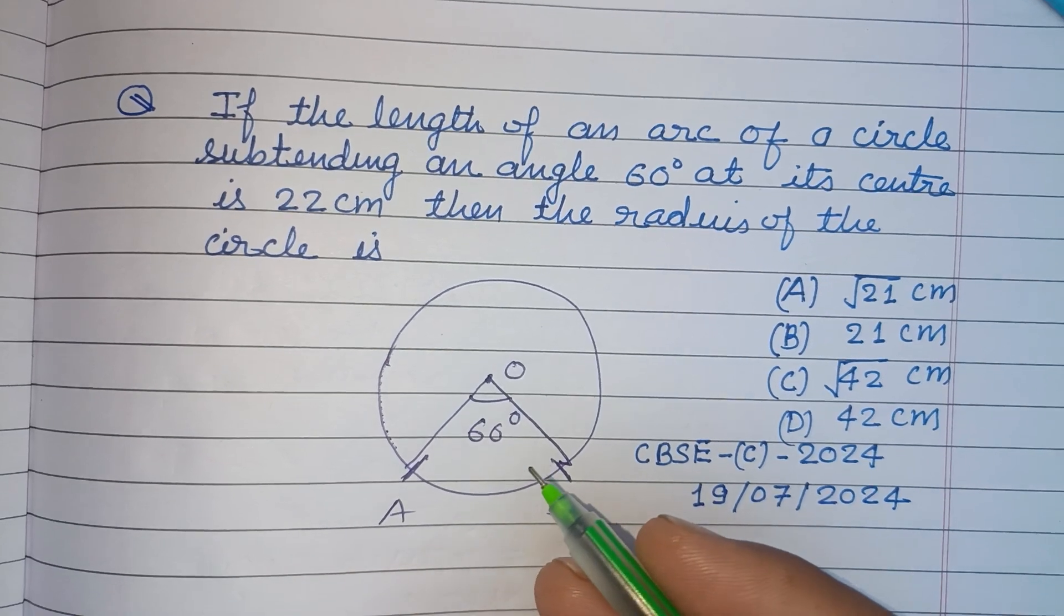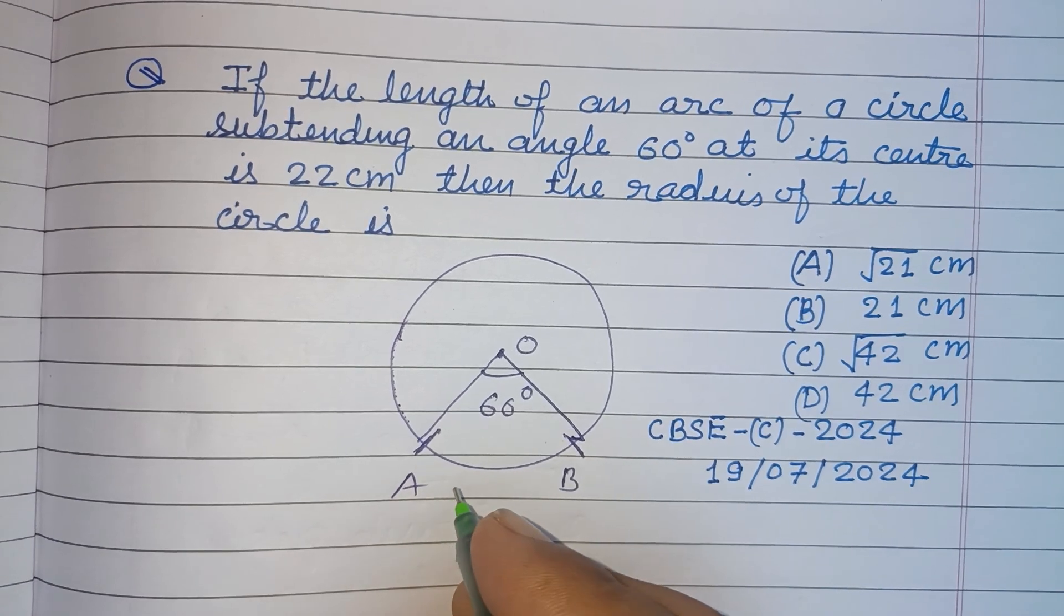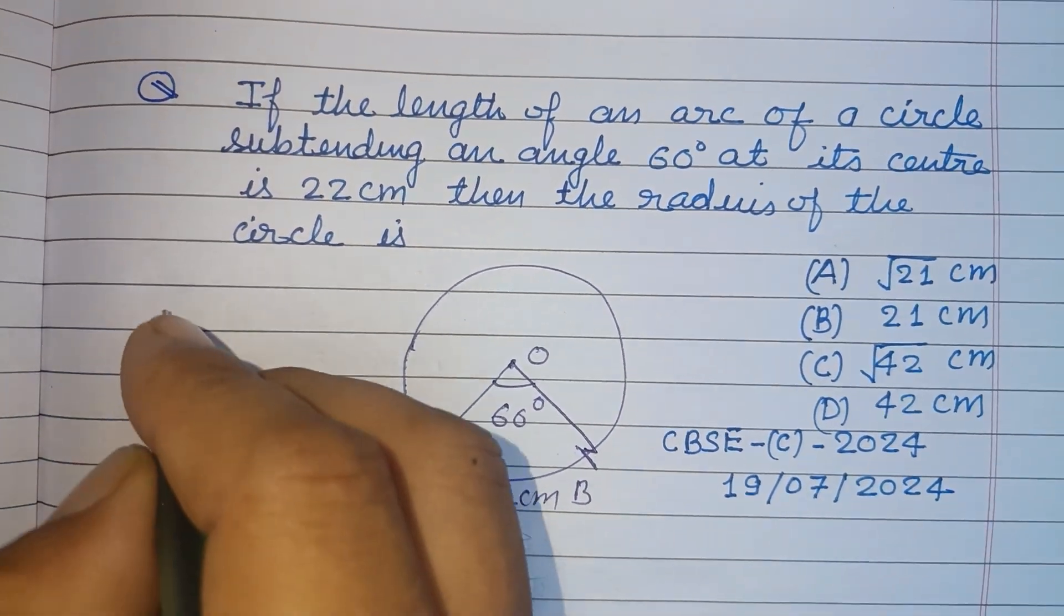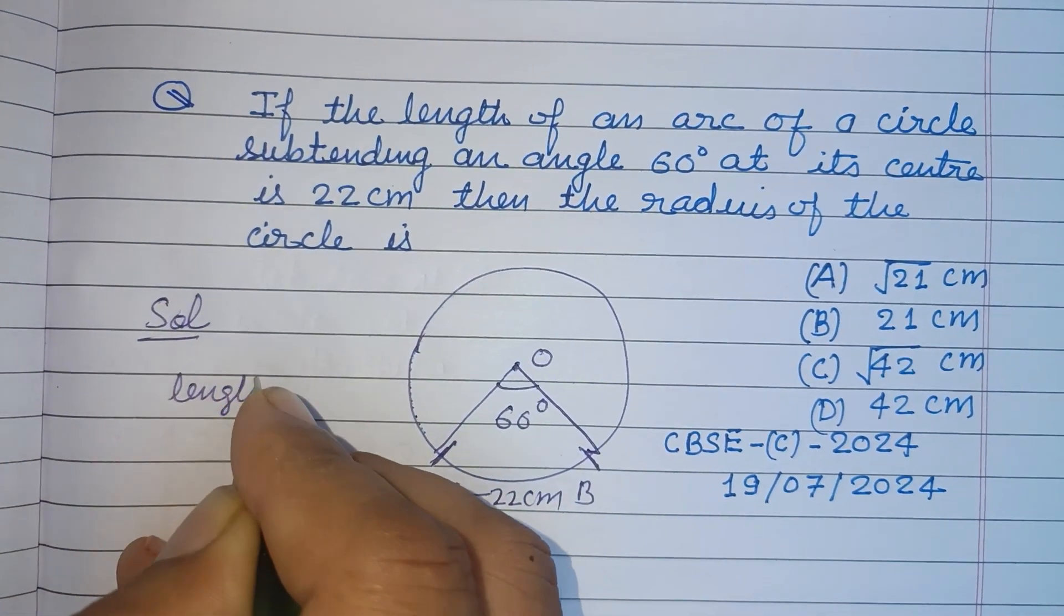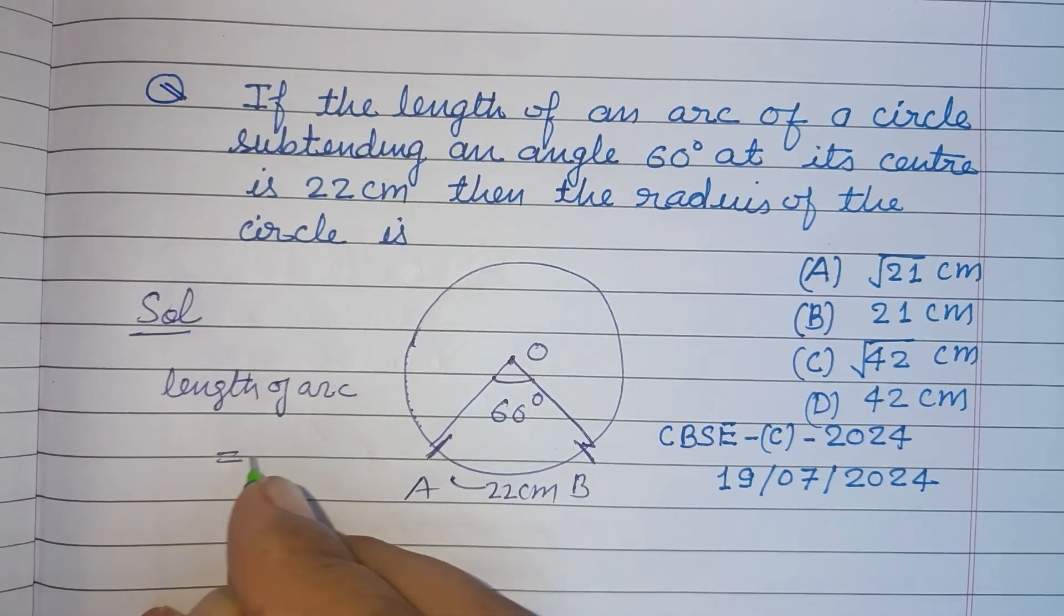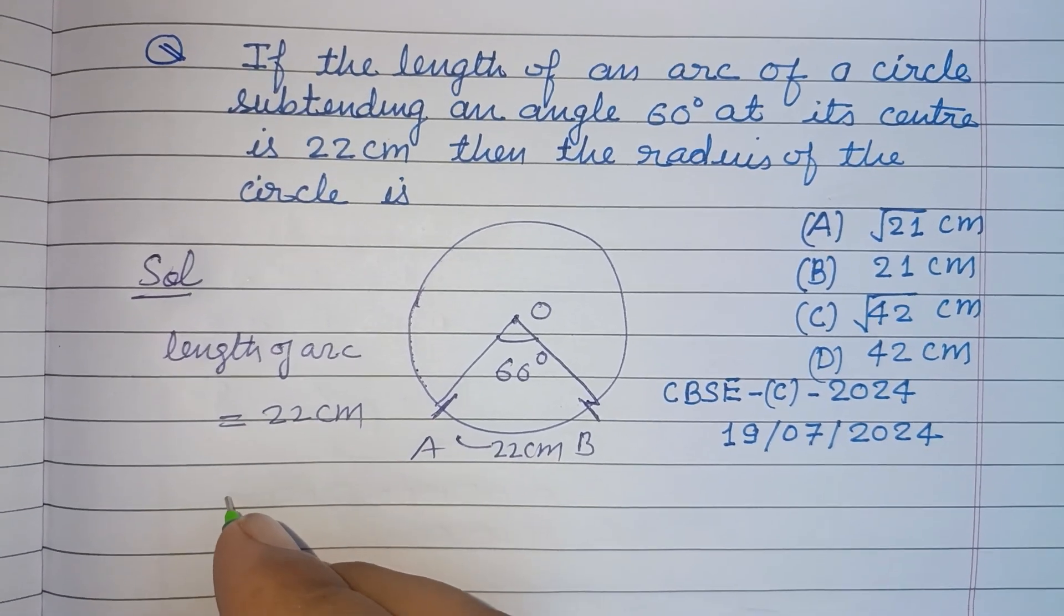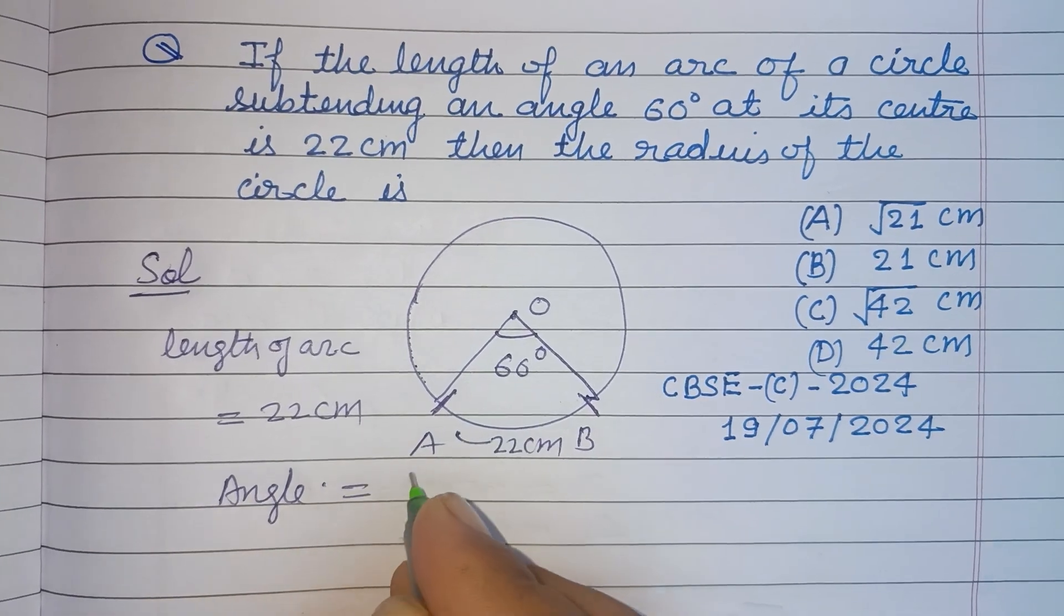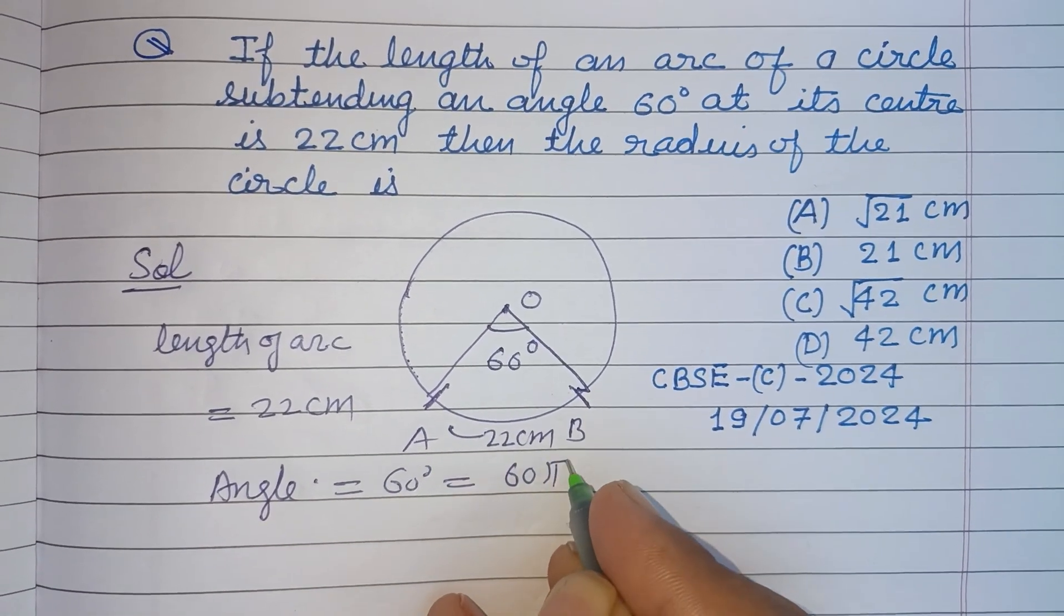At its center, the length of this arc is 22 centimeters. So length of arc equals 22 centimeters. Angle is 60 degrees, or we write it as 60π/180, so π/3 radians.